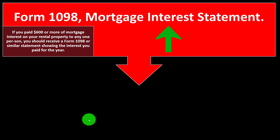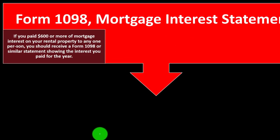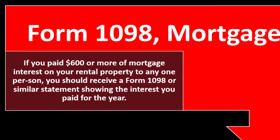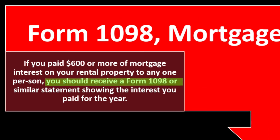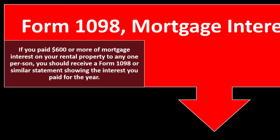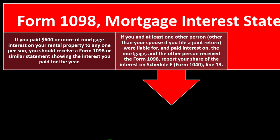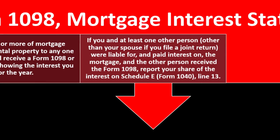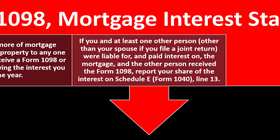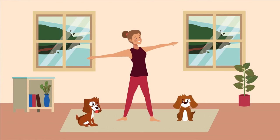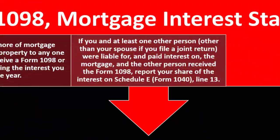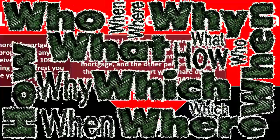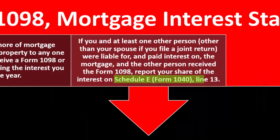Form 1098 Mortgage Interest Statement: if you paid $600 or more of mortgage interest on your rental property to any one person, you should receive a Form 1098 showing the interest paid for the year. If you have multiple rental properties and personal property, make sure you sort the 1098s correctly — is this your home or your rental? Tax preparers need to know which form each 1098 belongs to, whether Schedule A or Schedule E.